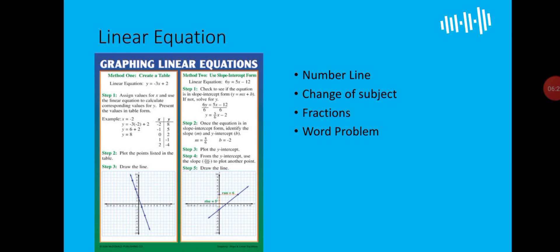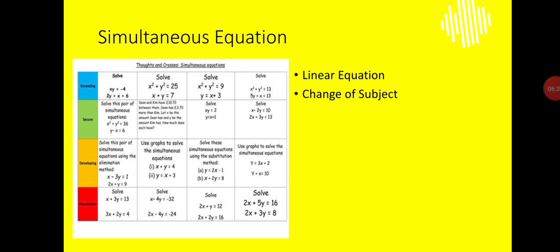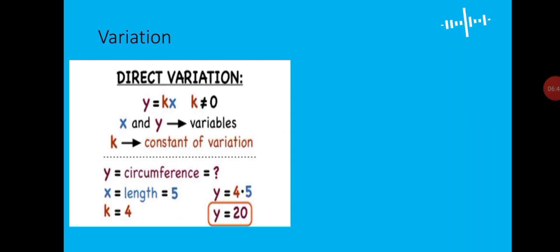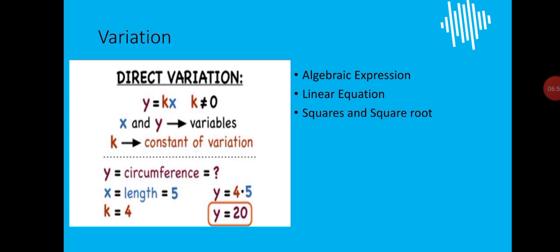Then word problem as well. We also have simultaneous equations involving two variables, which was introduced in the new curriculum — if you understand your linear equations and change of subject very well, you'll manage it. Then we have variation — direct variation and indirect variation. For variation, you should be well abreast with your algebraic expression, linear equations, squares, and square roots. The sub-topics under these topics will help you tackle exam questions.